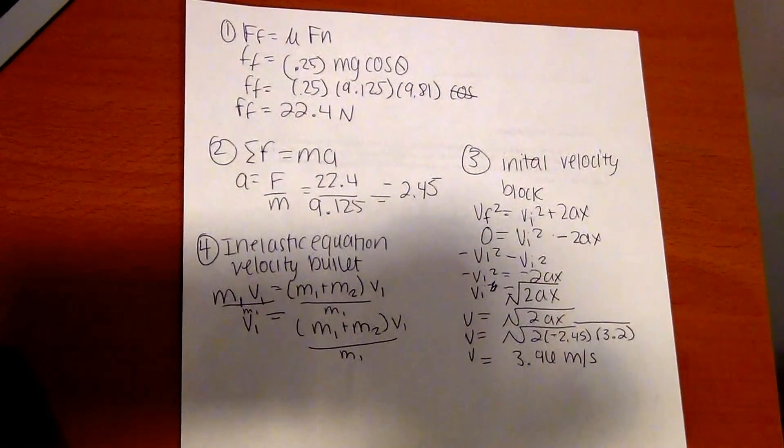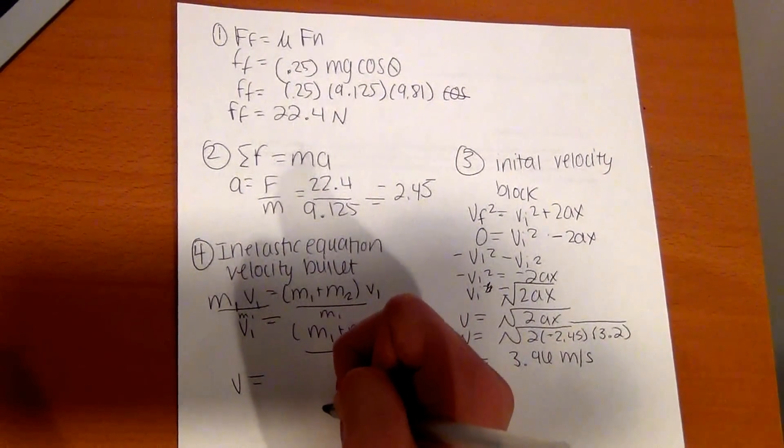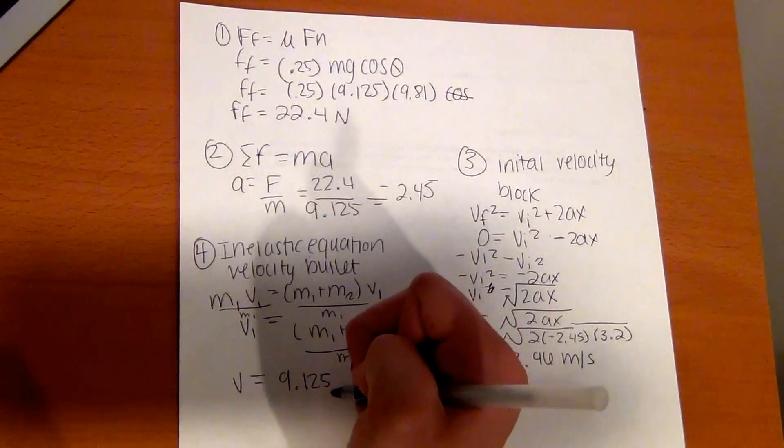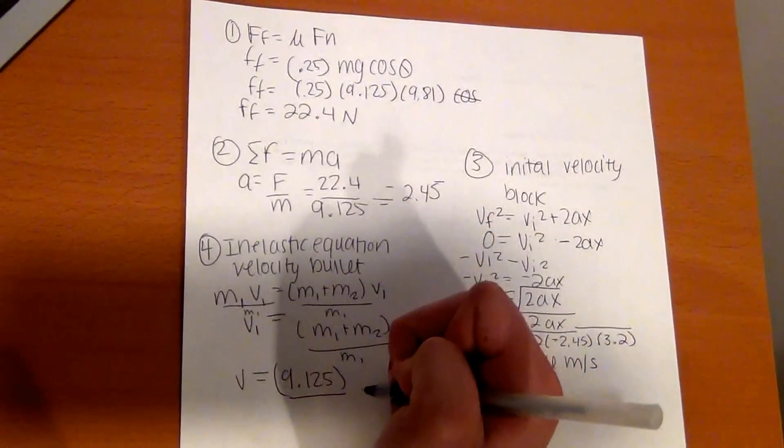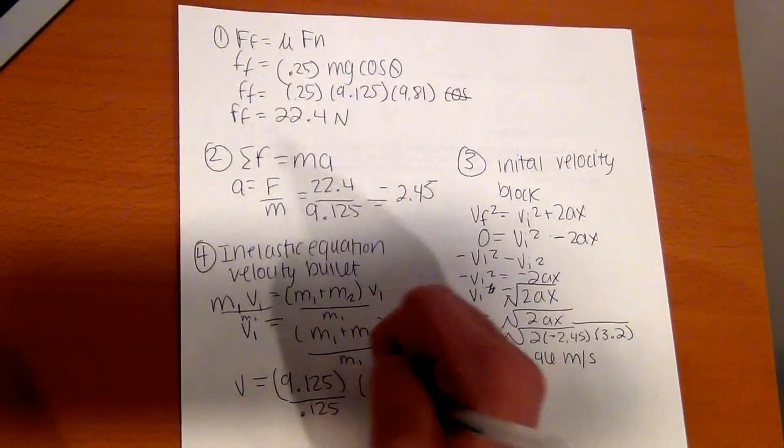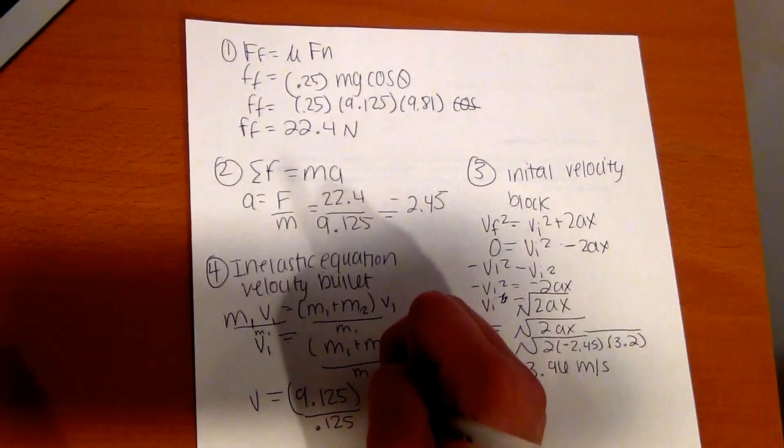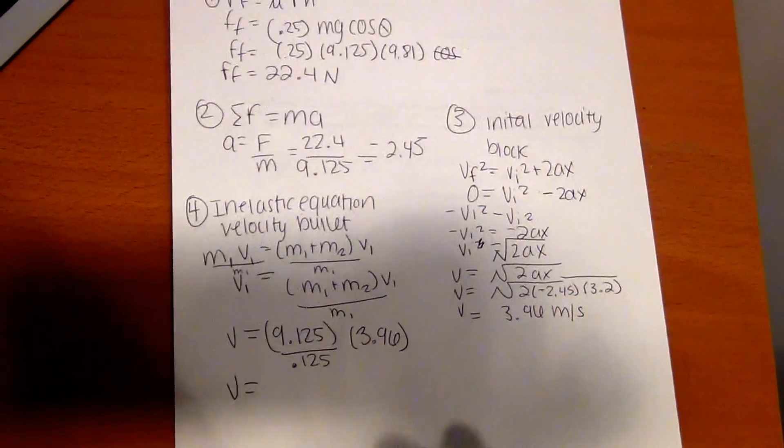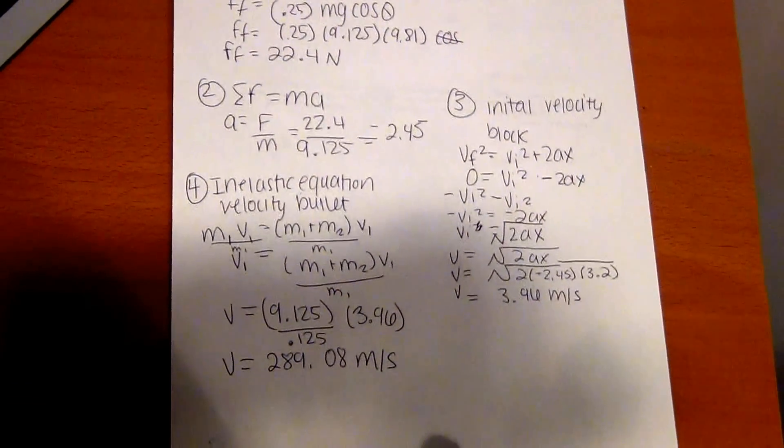M1 plus M2 is 9.125 because that's the block mass plus the bullet's mass. Then we multiply that and divide it by M1, which is the mass of the bullet, so 0.125. And then you multiply that by the initial velocity of the block. Since that was from step 3, we know it's 3.96. After you have all those numbers, plug them into your calculator, and you should get 289.08 meters per second, which is ultimately the final answer.